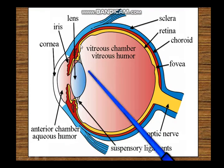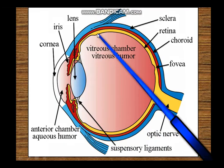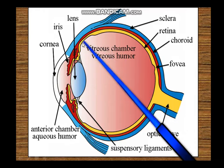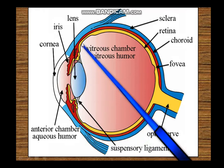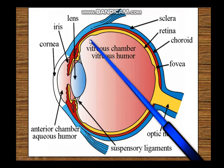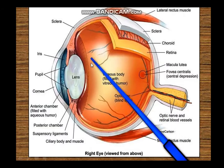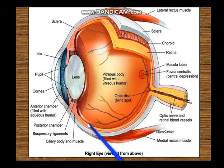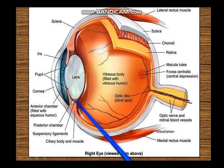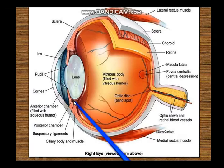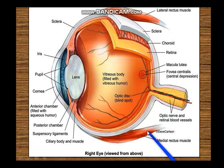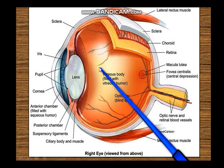You can see the serrated margin of the retina — the ora serrata — and the inner retinal coat beyond it covers the ciliary body and iris as non-nervous retina. This is a transverse section of the right eyeball as viewed from above, showing the lateral rectus and medial rectus muscles. Drawing the anteroposterior axis, you can confirm that the optic nerve is slightly medial to the posterior pole and the fovea and macula lutea are slightly lateral to the posterior pole.